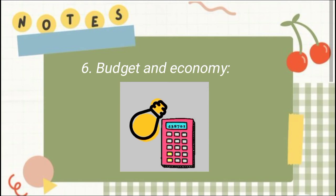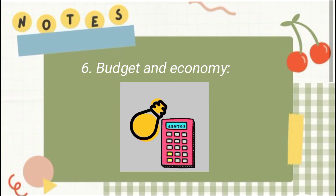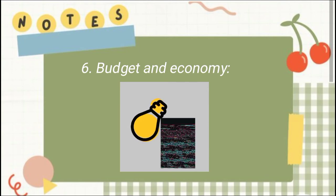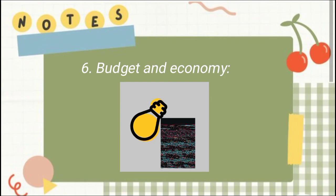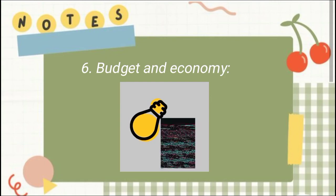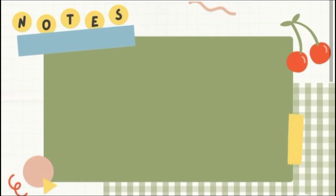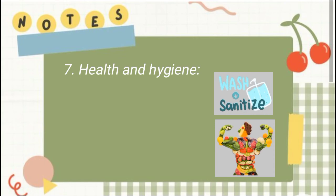Number six: budget and economy. Learning how to efficiently handle money is a really useful part of home economics. Students learn how to buy food and other essentials on a budget, which is a skill that will serve them well in later life.